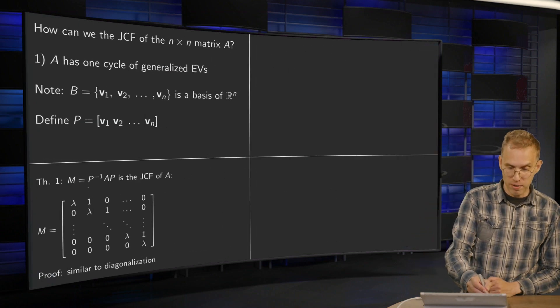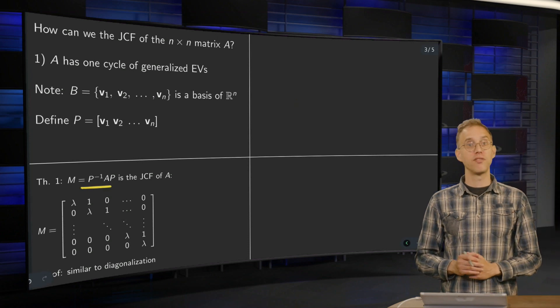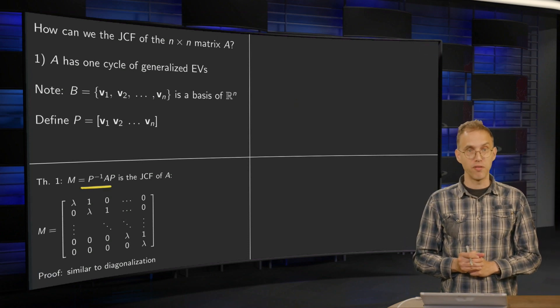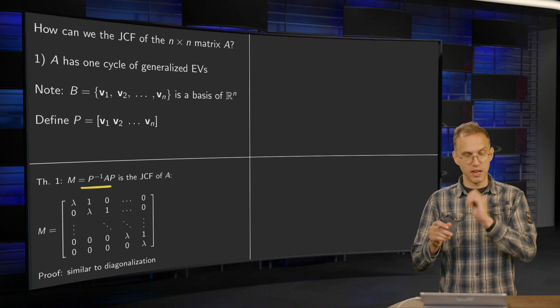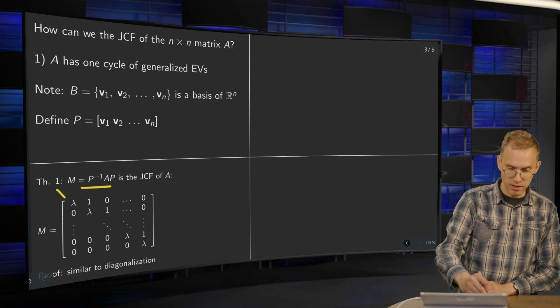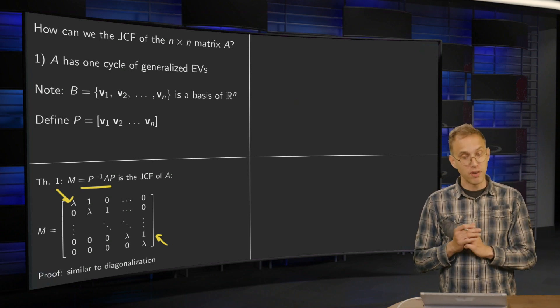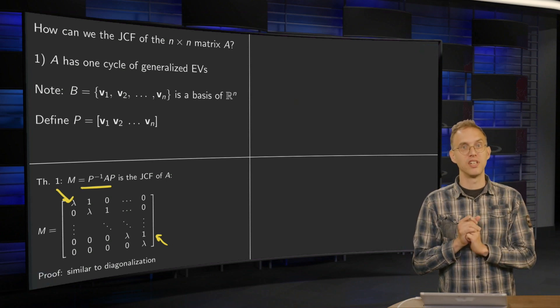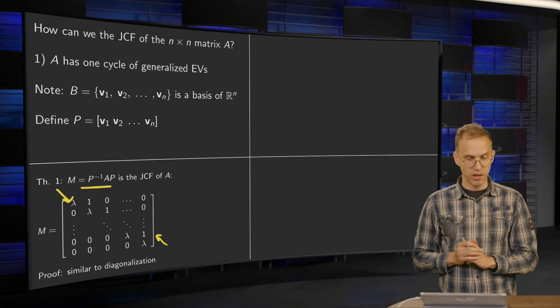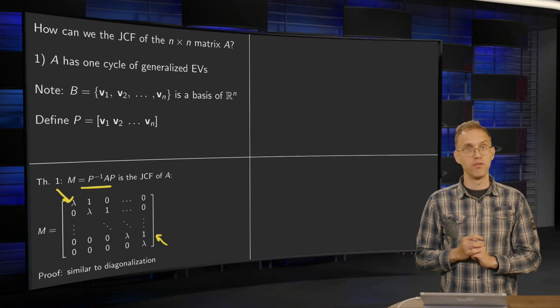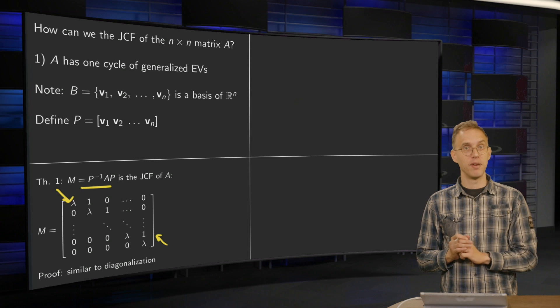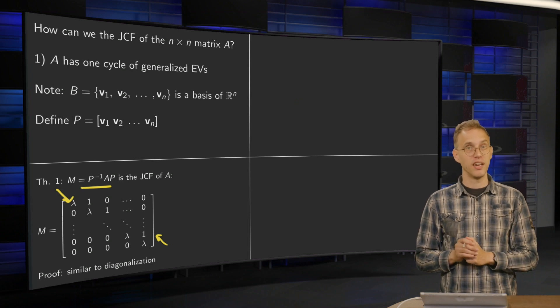Then we have the theorem. We can compute M equals P inverse A times P, and that will be the Jordan canonical form of A. This P inverse A times P will give you the lambda on the diagonal and the ones above. So if you have one cycle of generalized eigenvectors, boom, there you have your Jordan canonical form by putting them in the matrix P and computing P inverse AP.